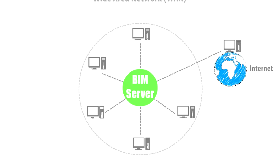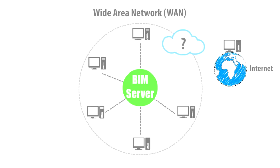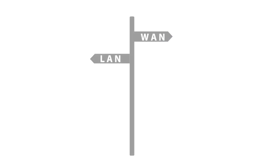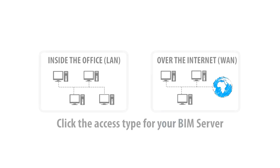However, if you want to access the BIM Server from the Internet or from office subnets, you will need to take extra steps to make the BIM Server accessible from remote locations as well. No matter what network setup you would like to use, we will guide you through the necessary steps. Now please decide how you would like to access your BIM Server — click either the Inside the Office LAN or over the Internet WAN option to proceed.